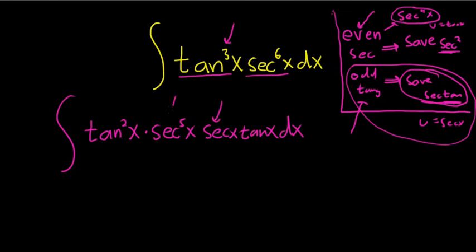So all we've done is we've factored out a secant and a tangent. Secant times secant to the 5th is secant to the 6th. Tangent times tangent squared is tangent cubed. All right, we saved a secant tangent. That means our u is going to be secant. That means everything else has to be secant.